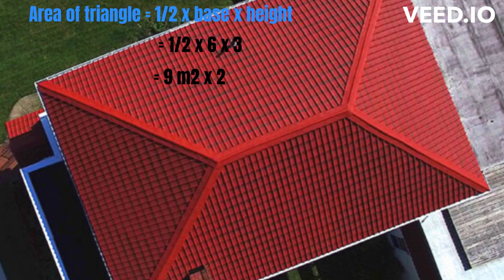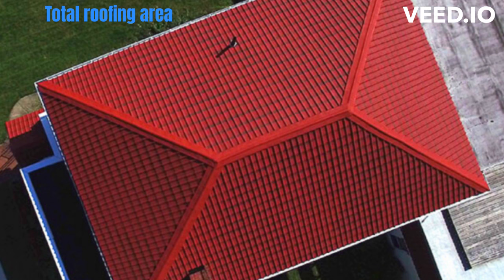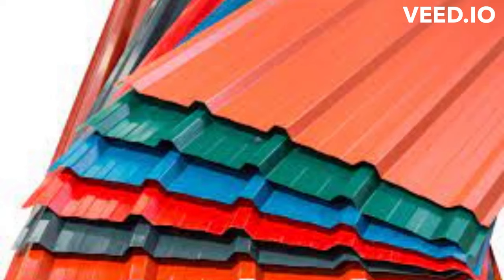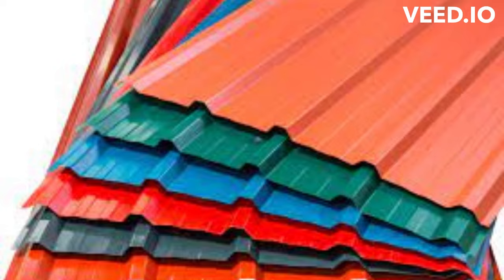The total roofing area will be the area of the trapeziums plus the area of the triangles: 72 square meters plus 18 square meters equals 90 square meters. With the roofing area known, the quantity of roofing material — be it tiles or sheets — can be calculated easily. Thanks for watching, till next time, bye bye.